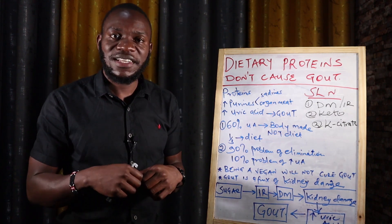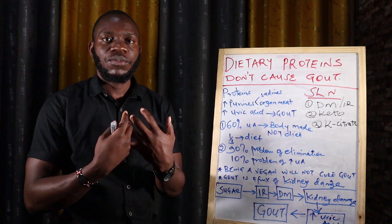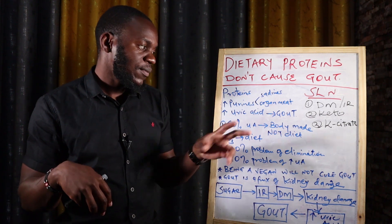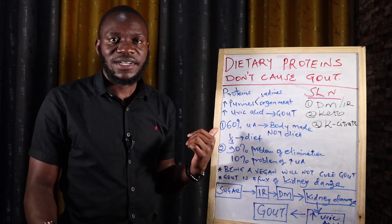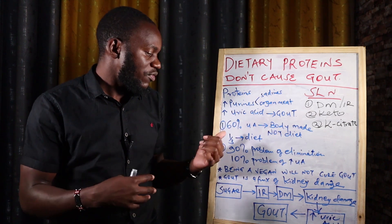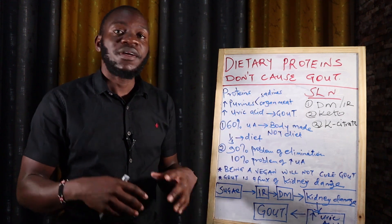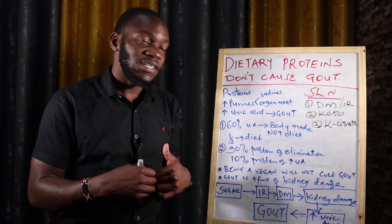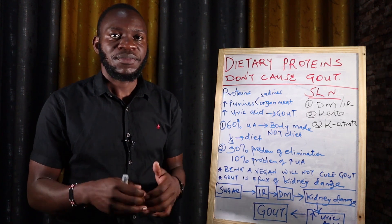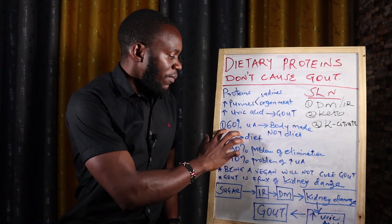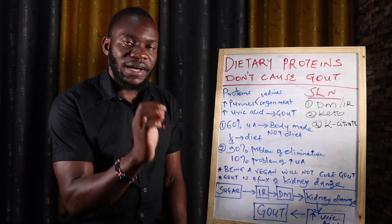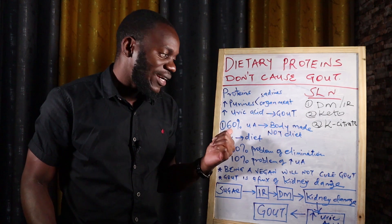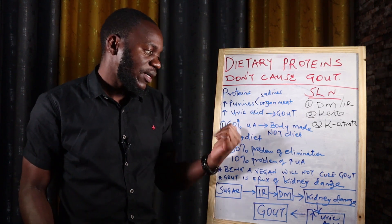Our own bodies form uric acid endogenously. Only a third of the purines that yield uric acid come from diet, which means a very small percentage of uric acid actually comes from what you eat. The major part is formed by the body itself — keep that in mind.